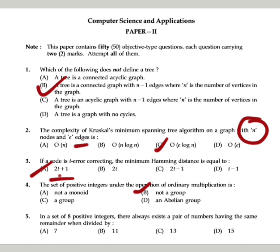In a set of 8 positive integers, there always exists a pair of numbers having the same remainder when divided by what? This is also a question from discrete mathematics, which is the pigeonhole principle. According to pigeonhole principle, if you have to solve it, the option is 7. You can understand it - you have 8 positive integers, and when you divide from 7, you can divide from 7.